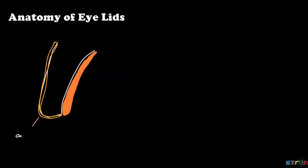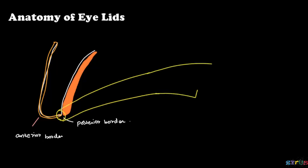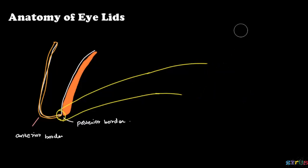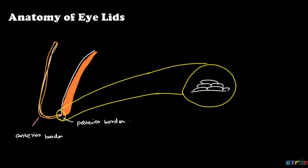Now let's see about the margin. The margin has the anterior and the posterior border. At the junction of the posterior border, where the skin continues to the conjunctiva, the type of cell lining is that of the stratified squamous.